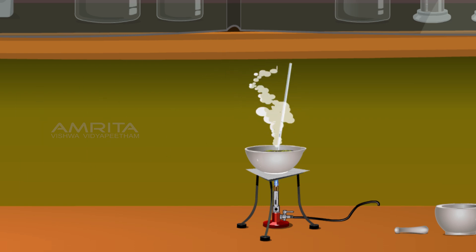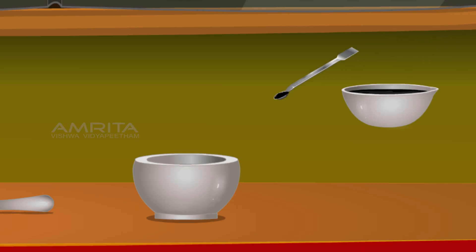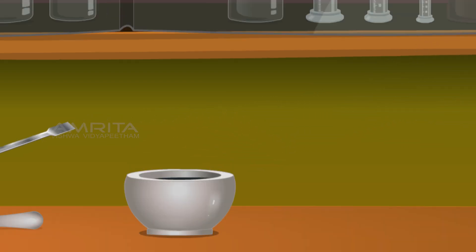Stir the contents constantly till a black mass, the compound of sulphur and iron, is formed. Cool and transfer the contents into a mortar and powder this using a pestle. Then transfer the powdered contents into another beaker using a spatula and label it black mass B.